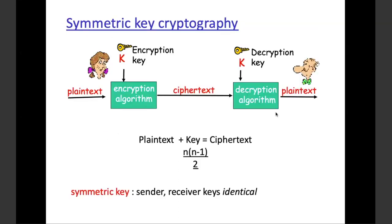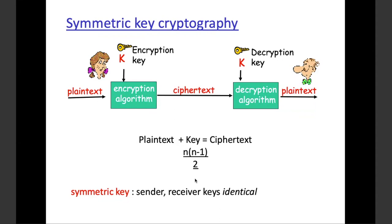Coming back to symmetric key cryptography — when there is one key being used, there's a plain text. We encrypt it using the encryption key and it becomes cipher text. That cipher text is then decrypted by the other person. If Alice sent some information to Bob, Bob will use the same key to decrypt it. The formula for the number of keys is n(n-1)/2.